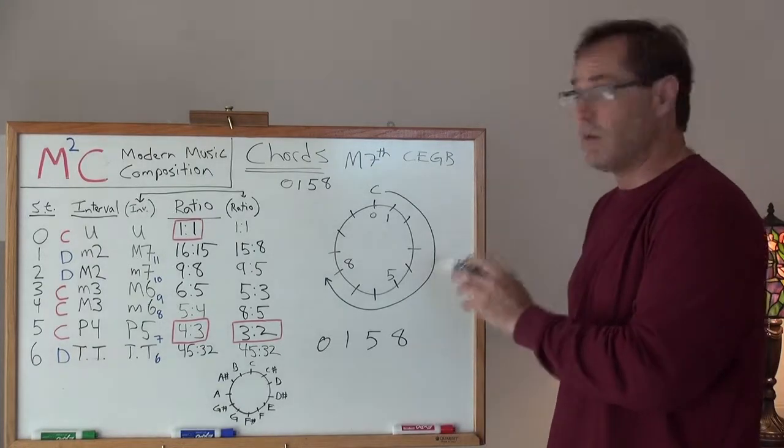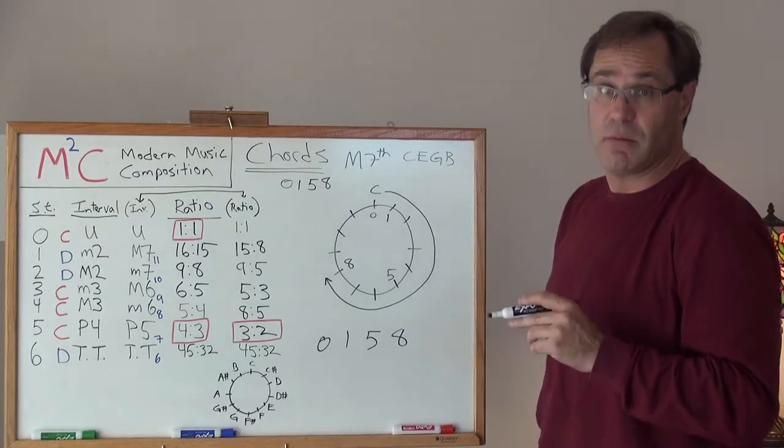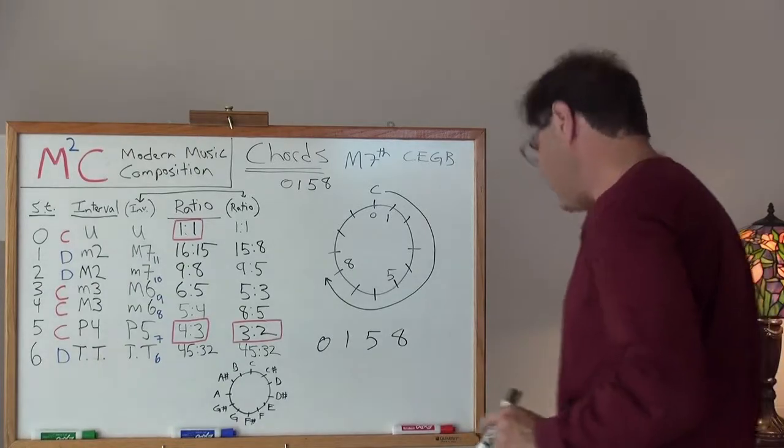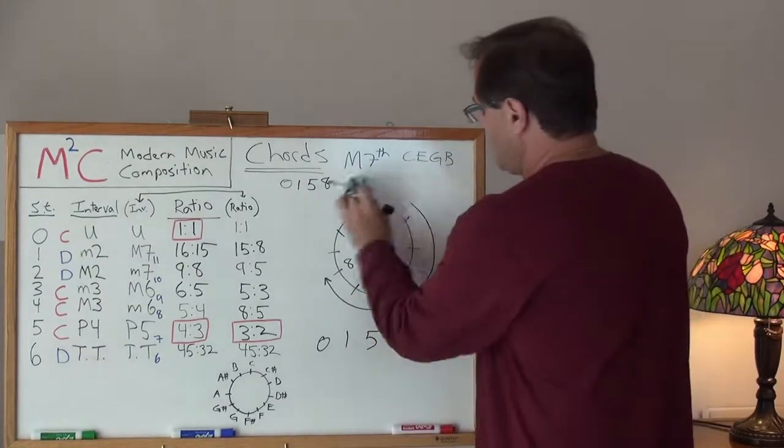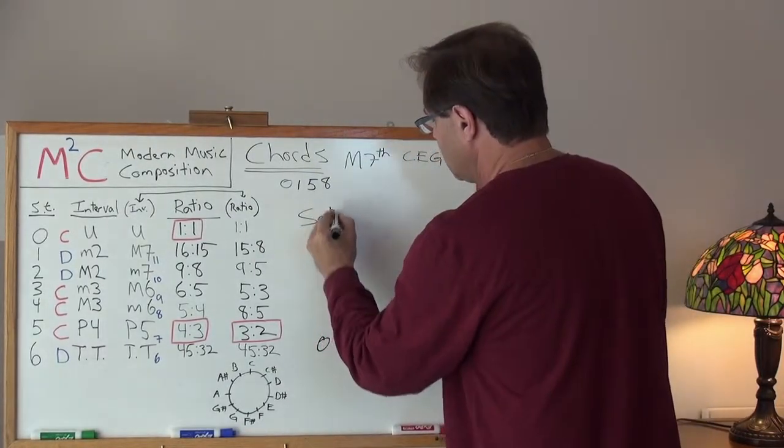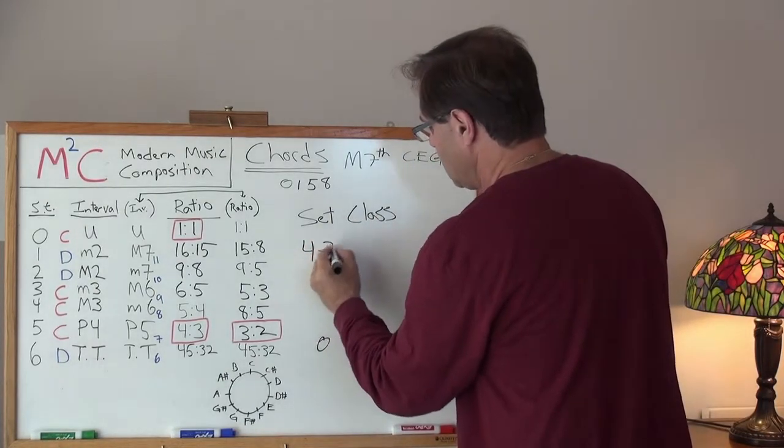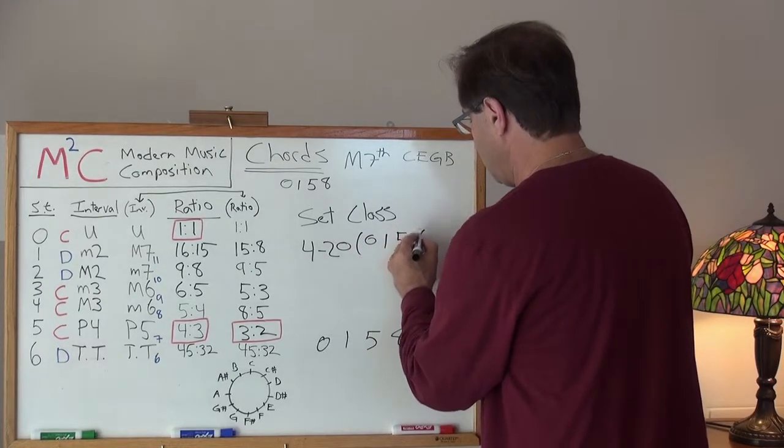Turns out, when they're the same, you know that that's the prime form. So, 0, 1, 5, 8 is our prime form and that is set class 4-20. 0, 1, 5, 8.